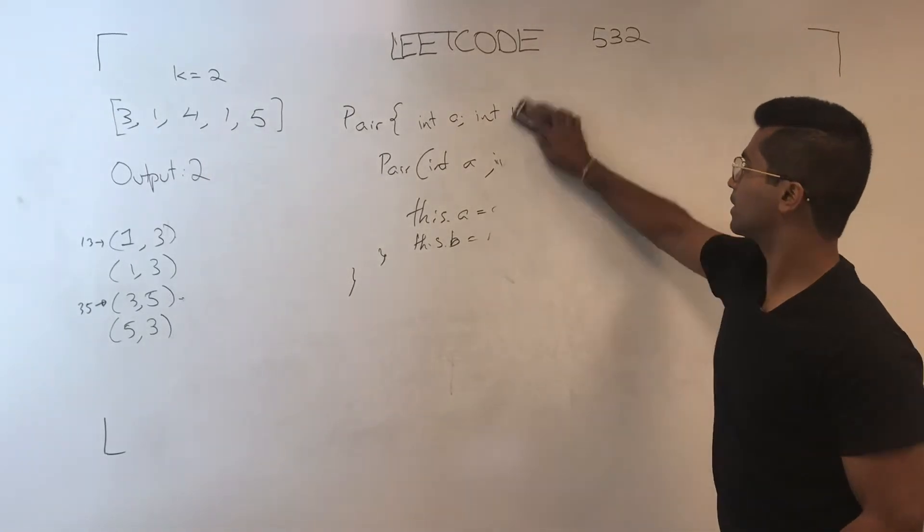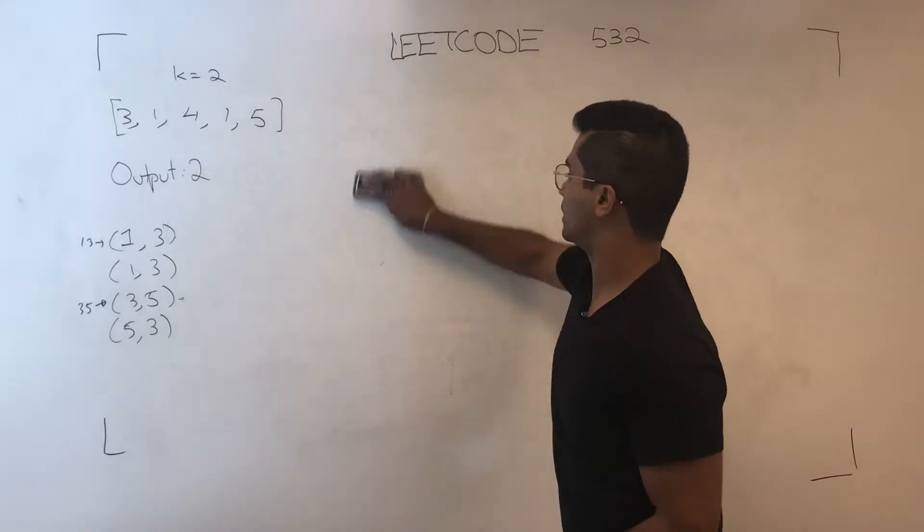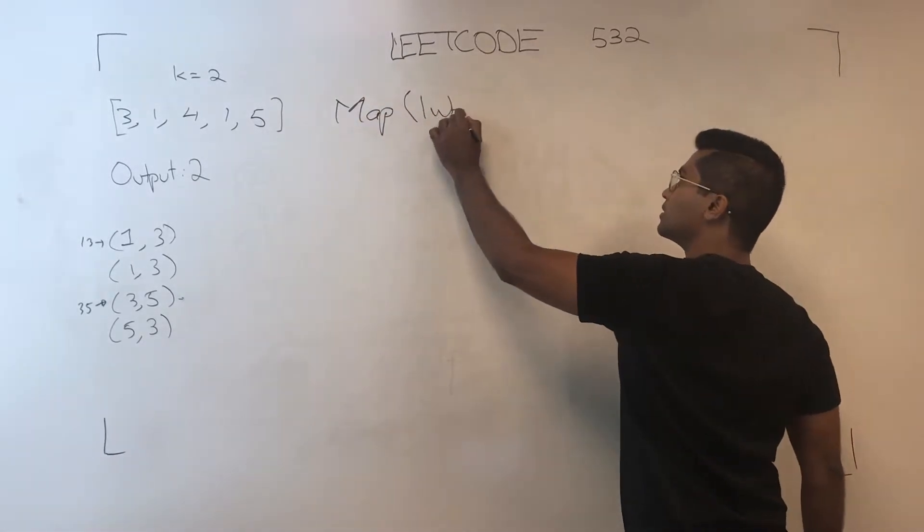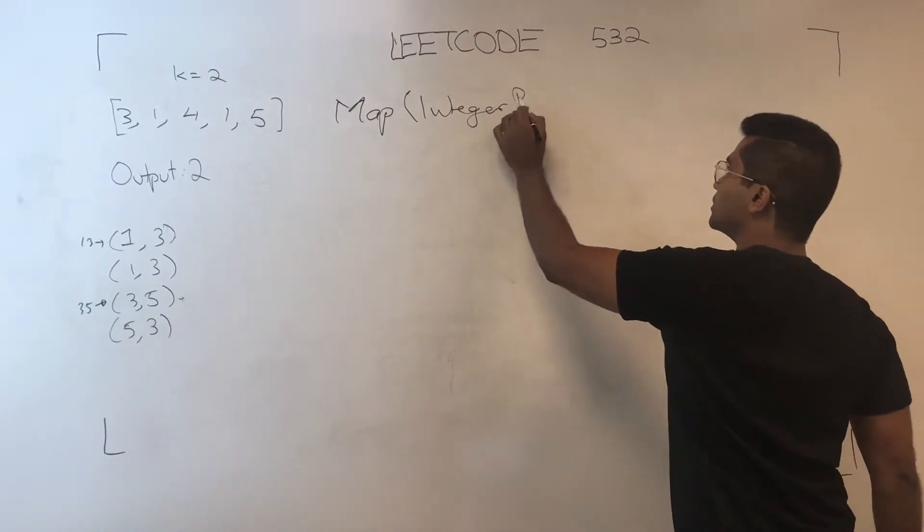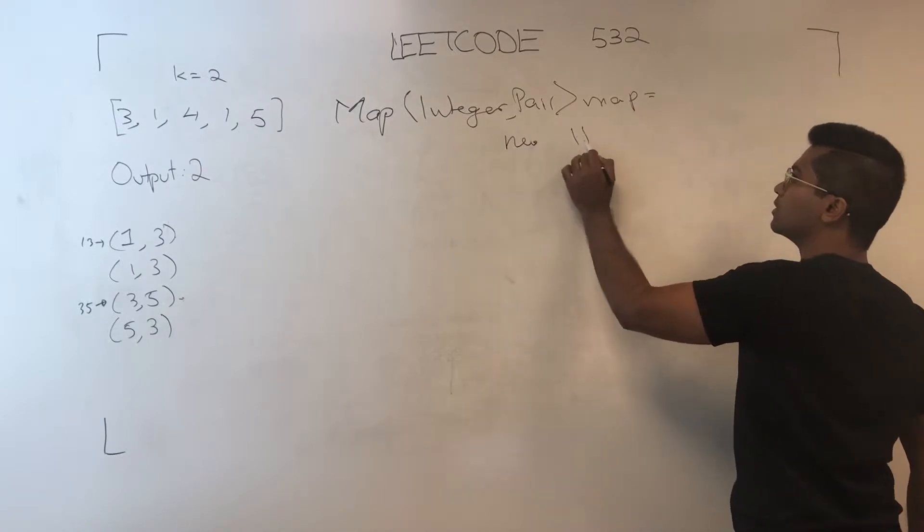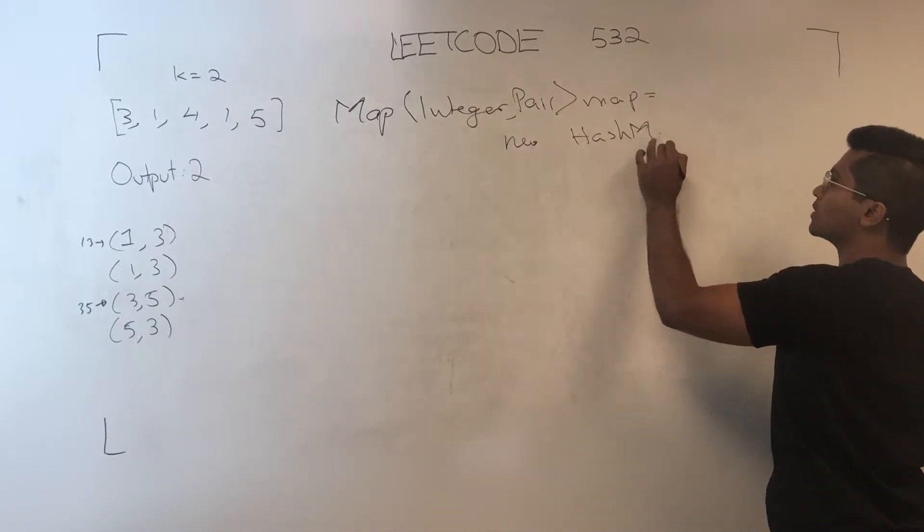Now that we have that, all we have to do is create a map: key integer, value pair, map equals new hash map.